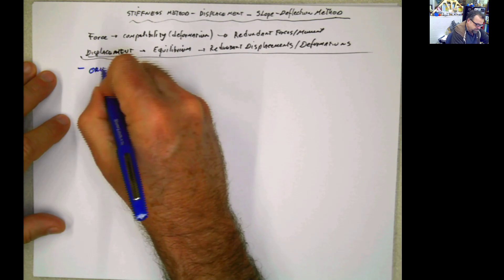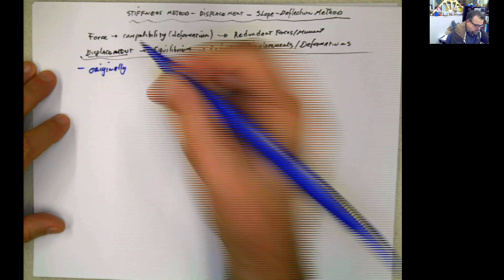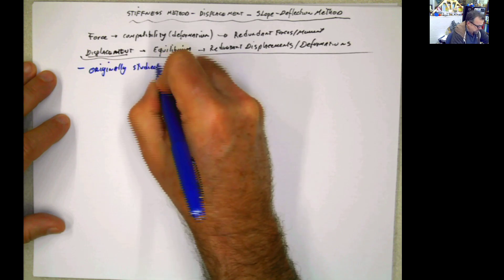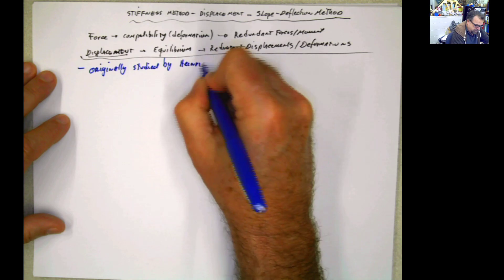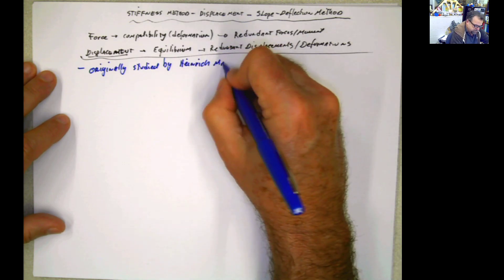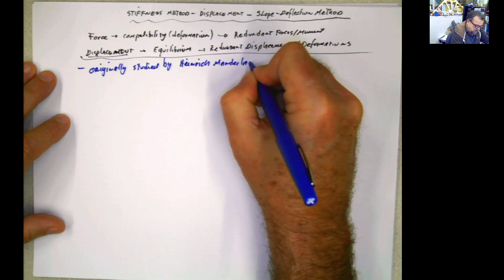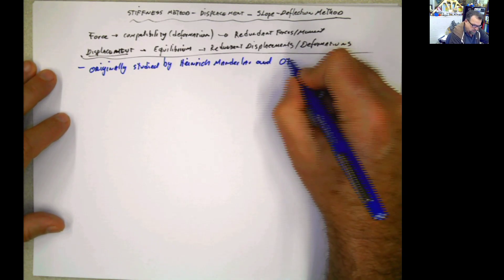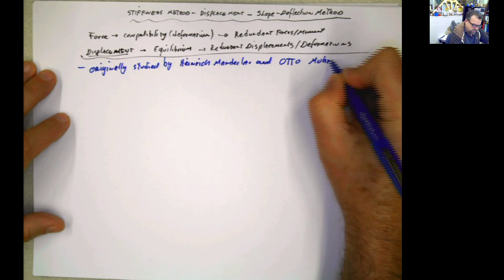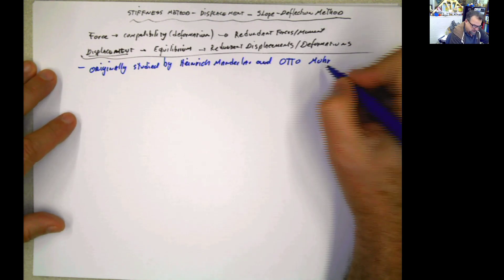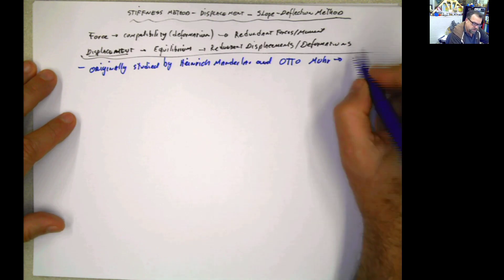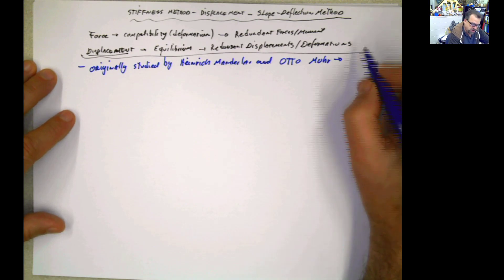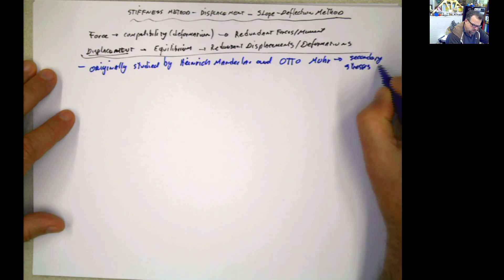This method was originally studied by Heinrich Manderla. And you're going to know this one, Otto Mohr. He's the Mohr circle, remember? This was the guy. And they were using this for studying secondary stresses, especially in trusses.